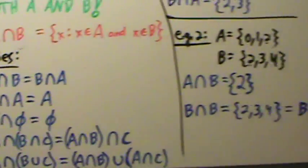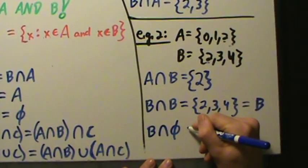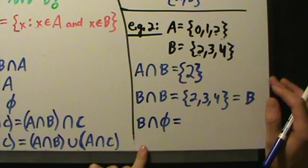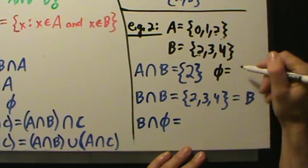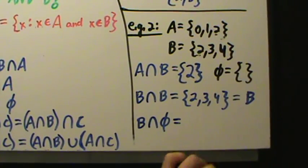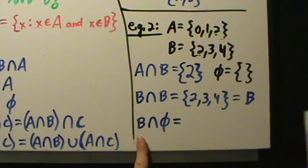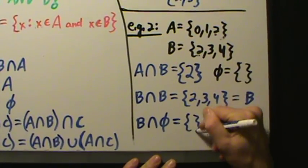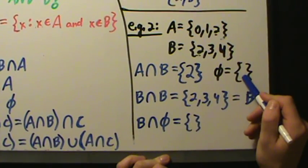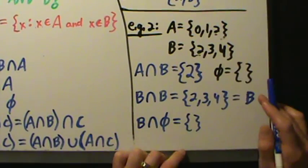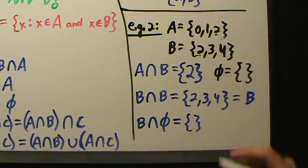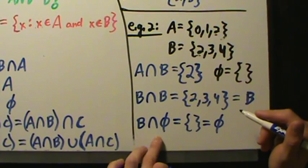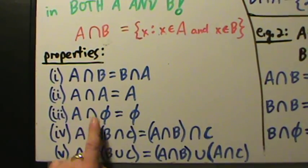What about property 3? Let's intersect B with the empty set. The empty set has nothing in it. B has 2, 3, and 4. The empty set has nothing. So what do they have in common? Nothing. If your answer is nothing, then that means the empty set. So B intersected with the empty set is the empty set. More generally, anything intersected with the empty set is just the empty set.